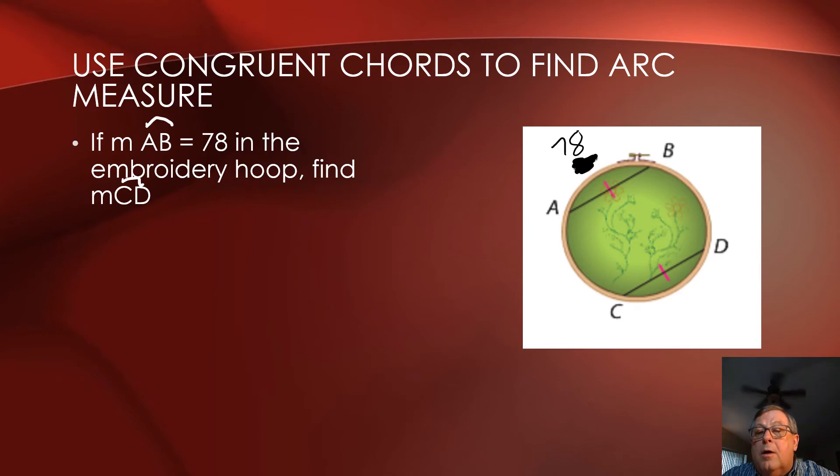In looking at my illustration, the chord CD is congruent to the chord AB, and therefore the arc AB and the arc CD are going to be congruent. And so, this is simple and straightforward enough. This means that arc CD is also going to be 78, because those two chords are congruent.